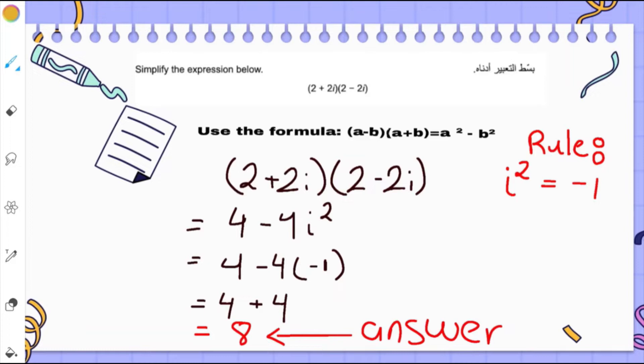We're going to use the formula a minus b times a plus b is equal to a squared minus b squared. So that's going to be 4 minus 4i squared.